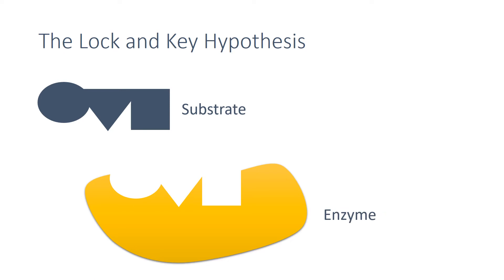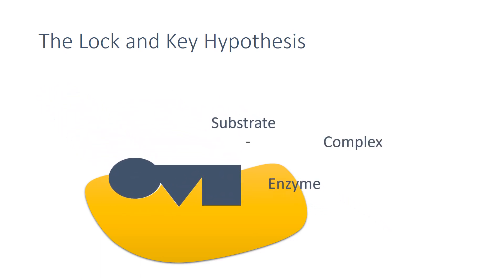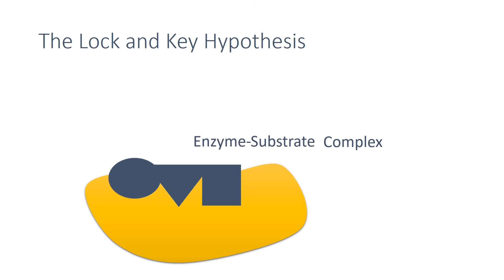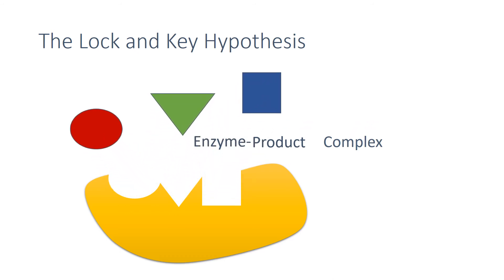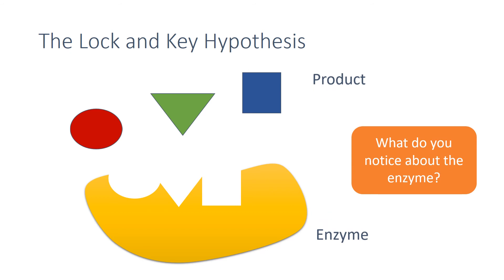The particular part of the enzyme where the substrate joins is known as the active site. As you can see, this is complementary in shape to the substrate. When the two join together we form what's known as an enzyme-substrate complex. The substrate then breaks down forming an enzyme-product complex and the products are then released. As you can see, the enzyme is unchanged and is therefore able to go on and catalyse other reactions.